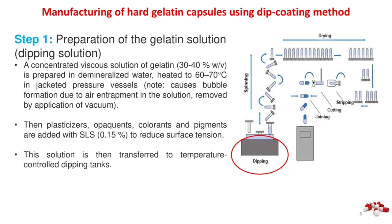Colorants include FD&C and D&C water-soluble dyes, certified lakes, azo dyes, etc., for pleasant appearance. Flavors such as ethyl vanillin (0.1–2%) for good flavor. Sugars such as sucrose up to 5% as sweetener. Thickener methylcellulose as viscosity modifier. Step 1 — Preparation of the gelatin solution: a concentrated viscous solution of gelatin 30–40% w/v is prepared in demineralized water, heated to 60–70°C in jacketed pressure vessels.